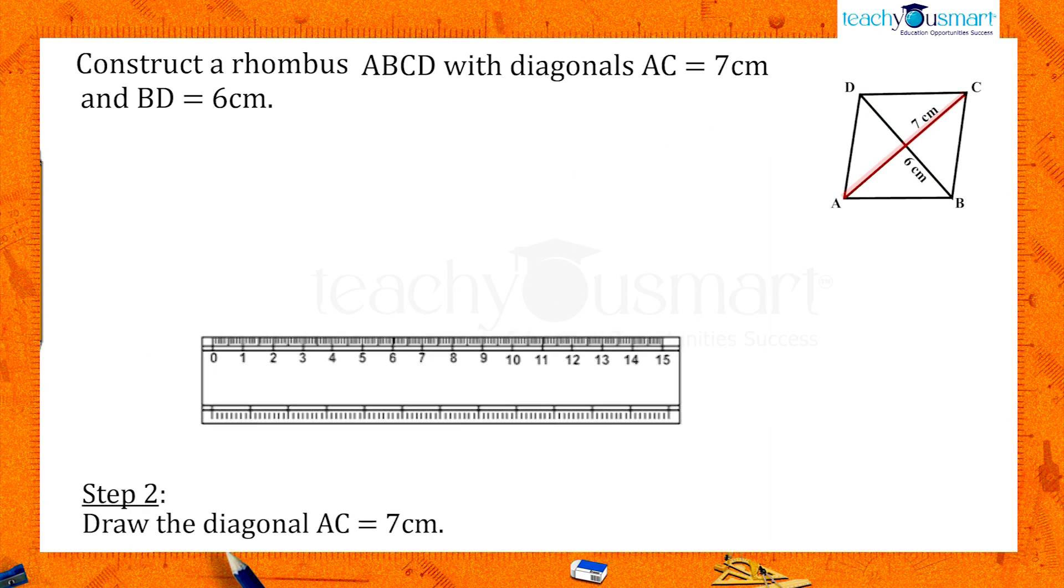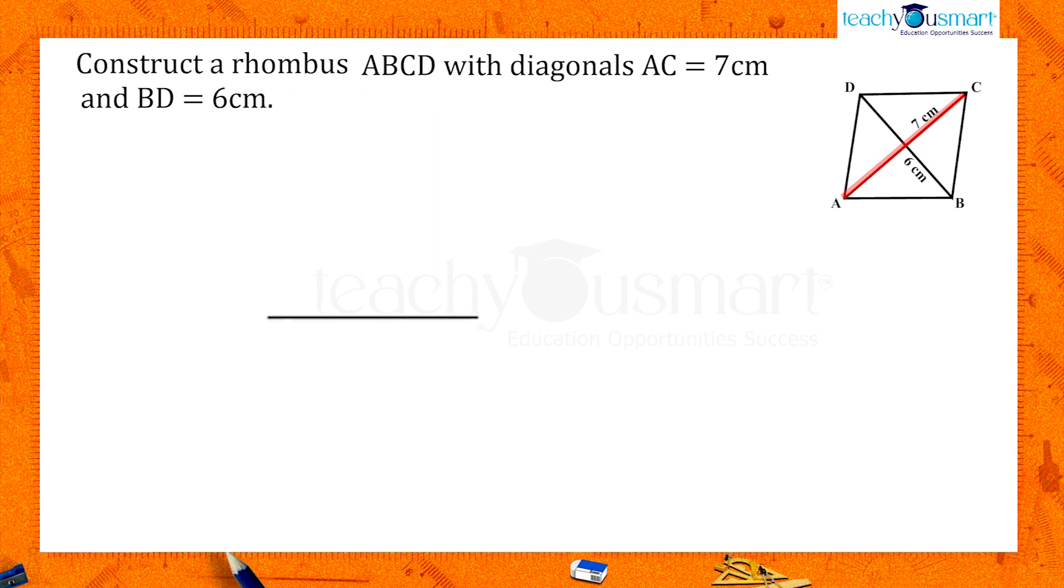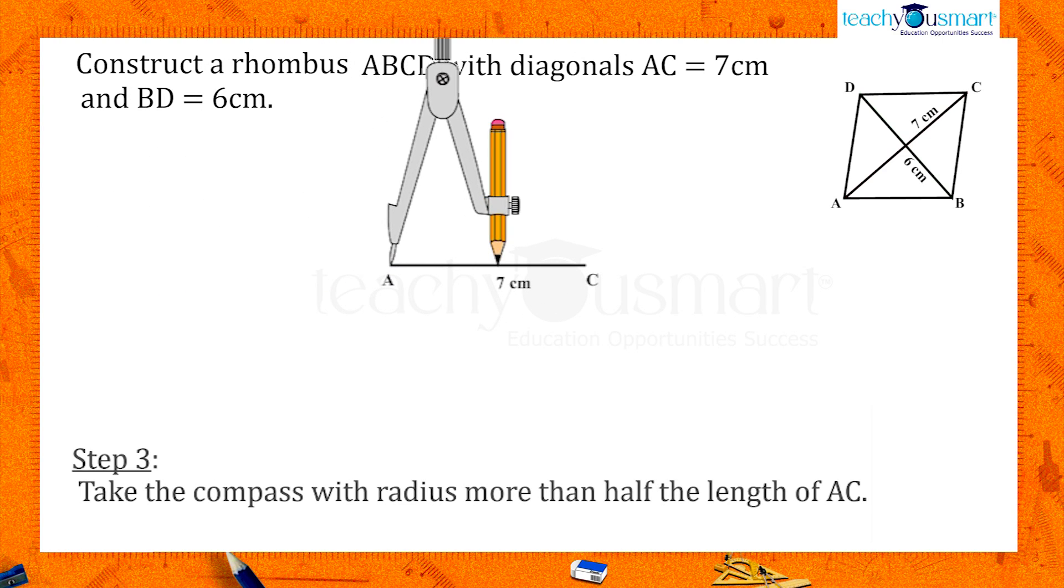Let's begin with the diagonal AC = 7 centimeters. Then construct its perpendicular bisector. To draw the perpendicular bisector of AC, take the compass with a radius more than half the length of AC.